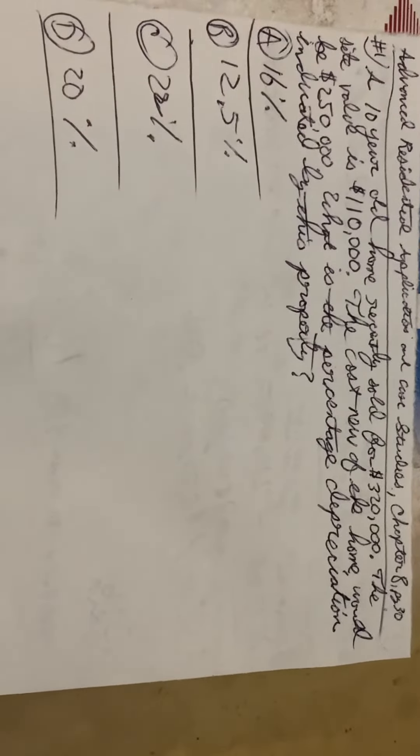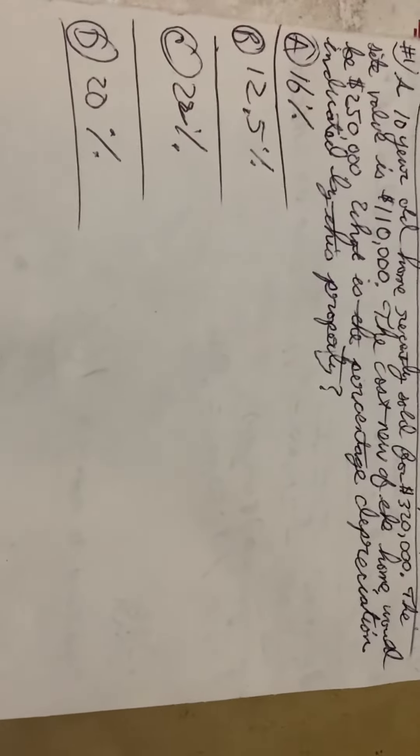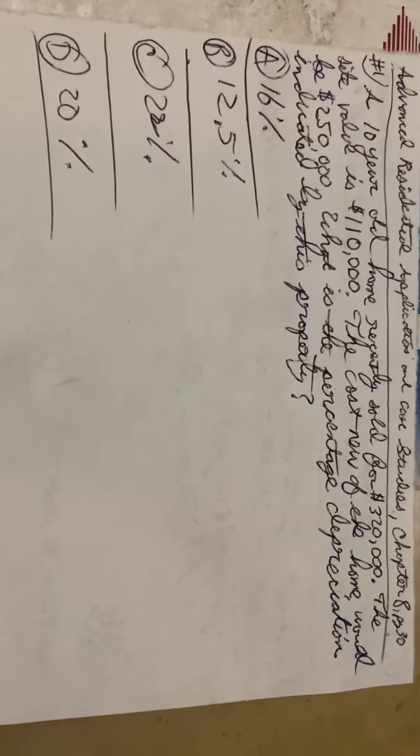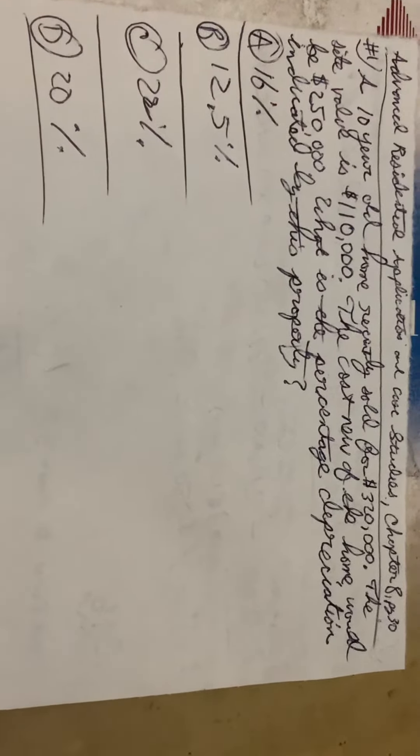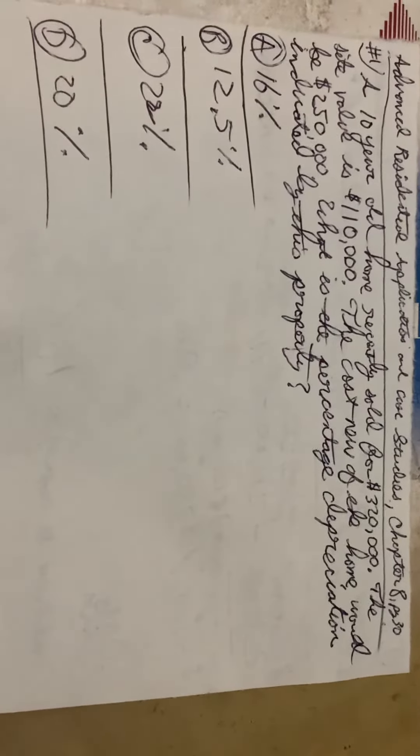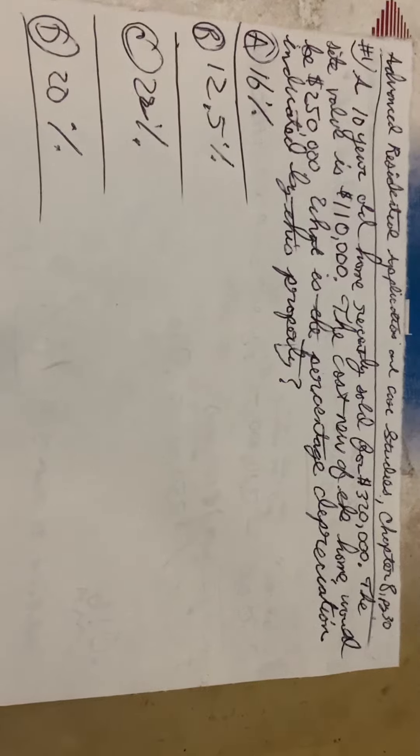This one's a difficult one because you missed it earlier back in the day. A 10-year-old home recently sold for $320,000. The site value is $110,000. The cost new of the home would be $250,000. What is the percentage depreciation indicated by this property?